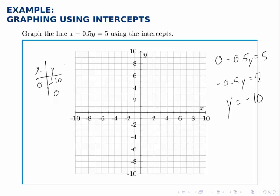We fill that out on the table and then do the same letting y equal 0. So if y equals 0, we have x minus 0.5 times 0 equals 5. And 0.5 times 0 is just 0, so x equals 5.